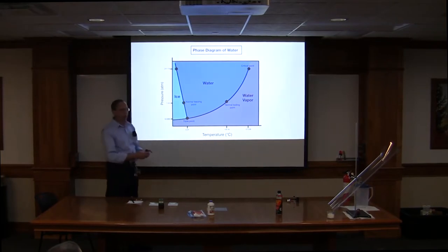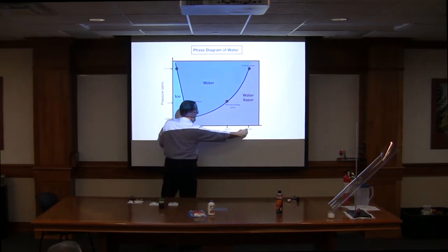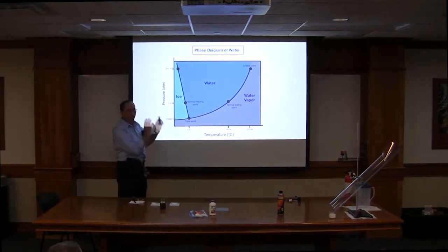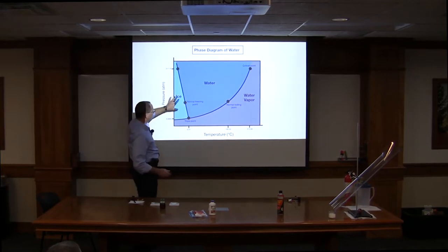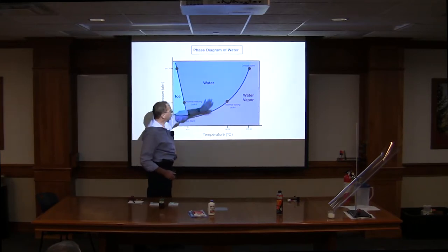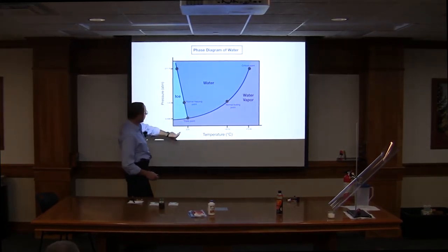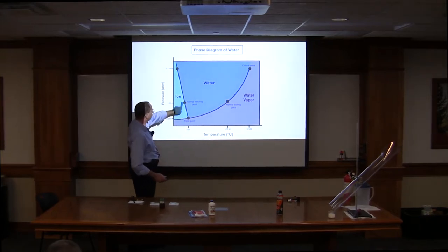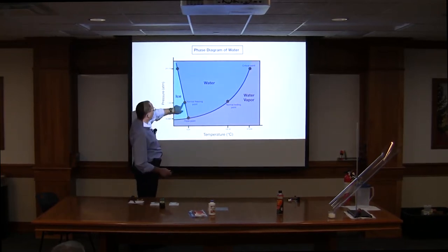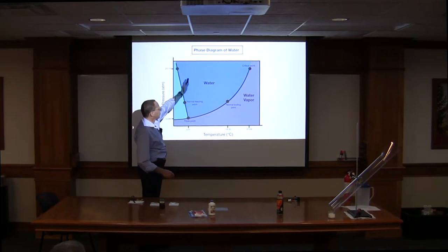This is a phase diagram of water — note it's not to scale. We have roughly zero and 100 degrees C marked, up to 274, and pressures from zero to 218 atmospheres. What it tells you is that at a given temperature and pressure, water is either a solid (ice), liquid, or water vapor. If you're just below the triple point at zero degrees C and one atmosphere of pressure — about where we are — water exists as ice. Increase the temperature, it crosses that line and becomes liquid water.